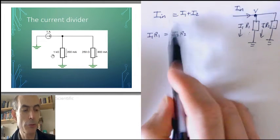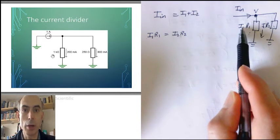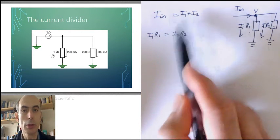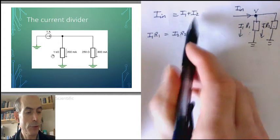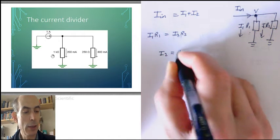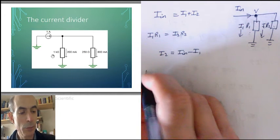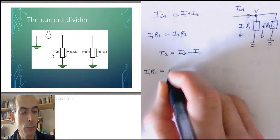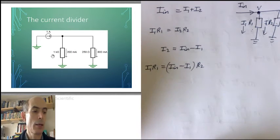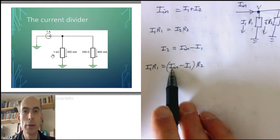And these are our two simultaneous equations that we want to solve for, let's say we want to work out I1. If we want to work out I1, we have to eliminate I2 between these two equations. So, let's, from this first equation here, note that I2 is I in minus I1, and substitute that into this equation here. That would give us I1 times R1 equals I in minus I1 times R2. Now, all we need to do is manipulate this equation to get it into the form I1 equals something.